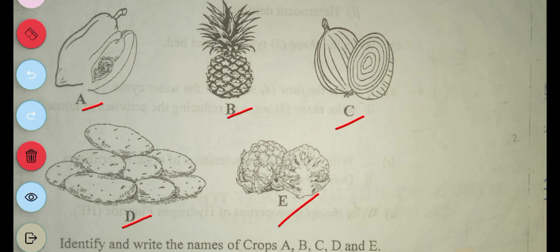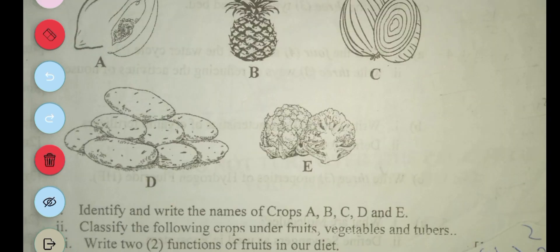And E is cauliflower. Next question says: classify the following crops under fruits, vegetables, and tubers. So purple is a fruit, pineapple is a fruit, onion is a vegetable.